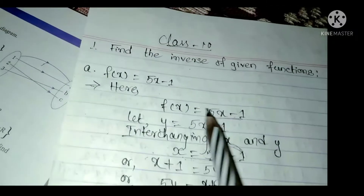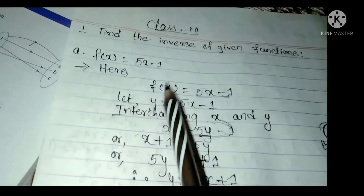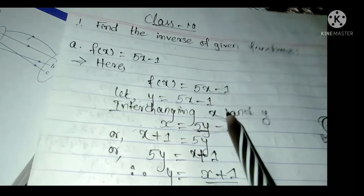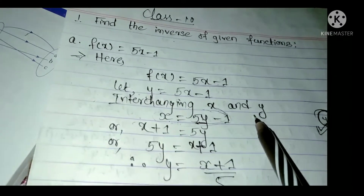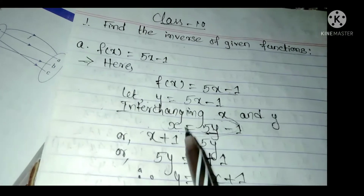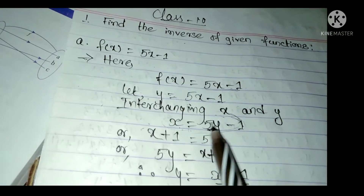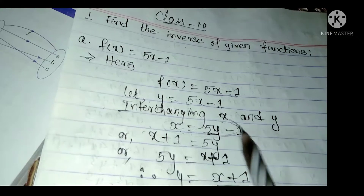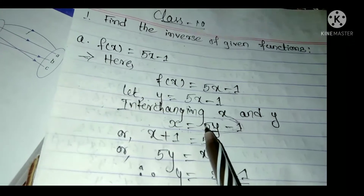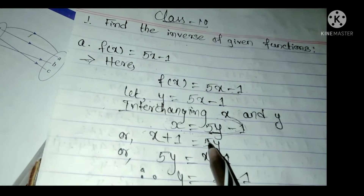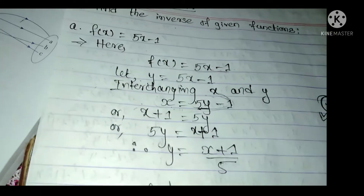The first step is the given function — let y equal to the given function. The second step is the interchange of x and y. The third step is to solve for the y value.